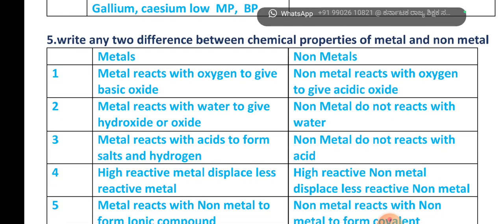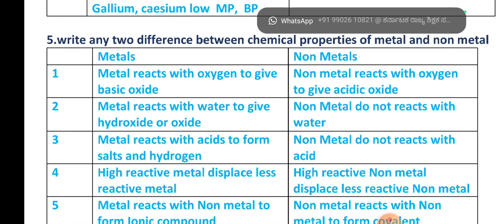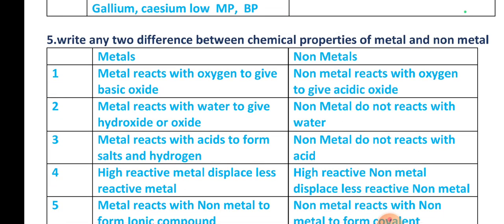Up to now, whatever we discussed were the physical properties — the differences between metals and non-metals in terms of physical properties. Now we are going to discuss the chemical properties of metals and non-metals.